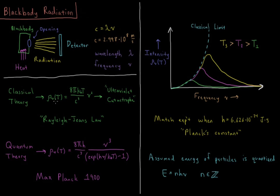In classical theory, the density of that radiation, rho (the Greek letter rho), so rho_nu of T for a given frequency at a given temperature, was 8π times the Boltzmann constant Kb times temperature over the speed of light cubed times the frequency nu squared.